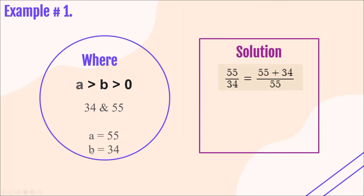Where A is greater than B and B is greater than 0 — meaning A is always greater than B. For example, we have 34 and 55. Our A equals 55 because A is always greater than B, and our B equals 34. Let's substitute the given values into the formula. The formula is A over B equals A plus B over A. So: 55 over 34 equals 55 plus 34 over 55.